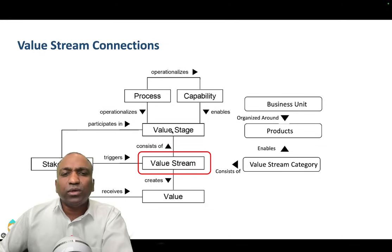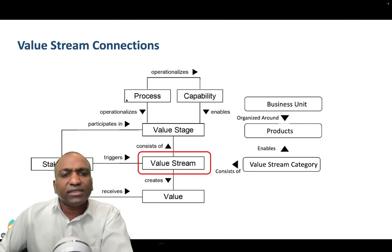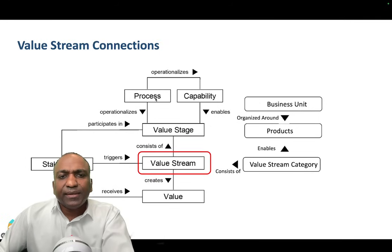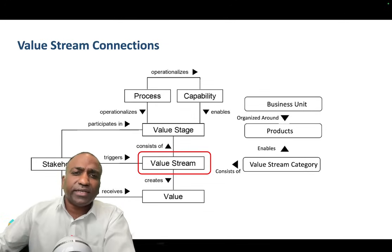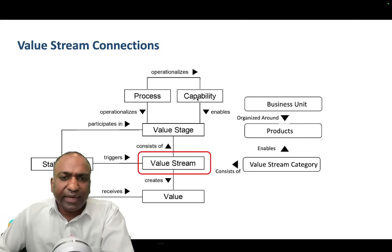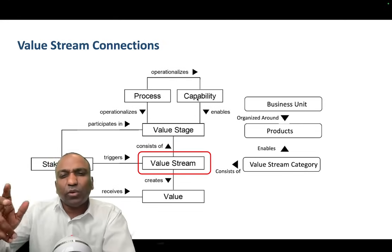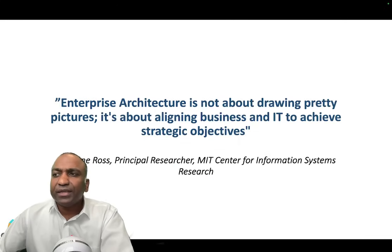Looking more closely at this relationship: business processes operationalize the value stream stages, and capabilities operationalize the business processes. This is why people react with concern when they come to value streams — the relationship gets very interesting. To understand this more deeply, you need to understand its relation to the portfolio and why the portfolio is concerned with all of this.